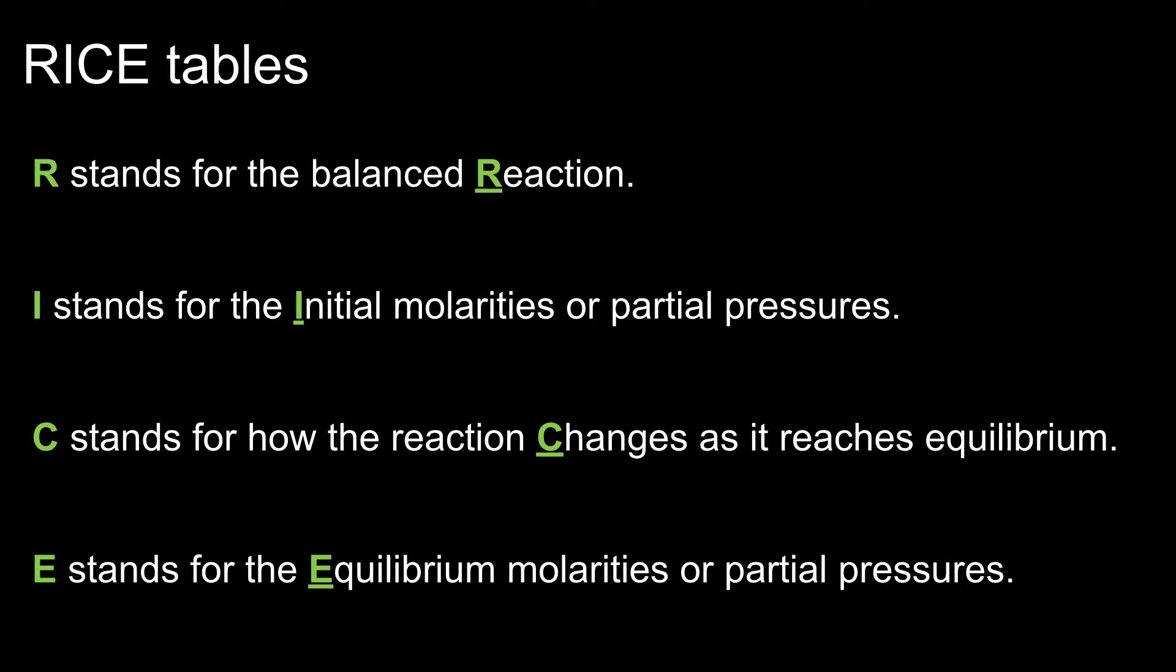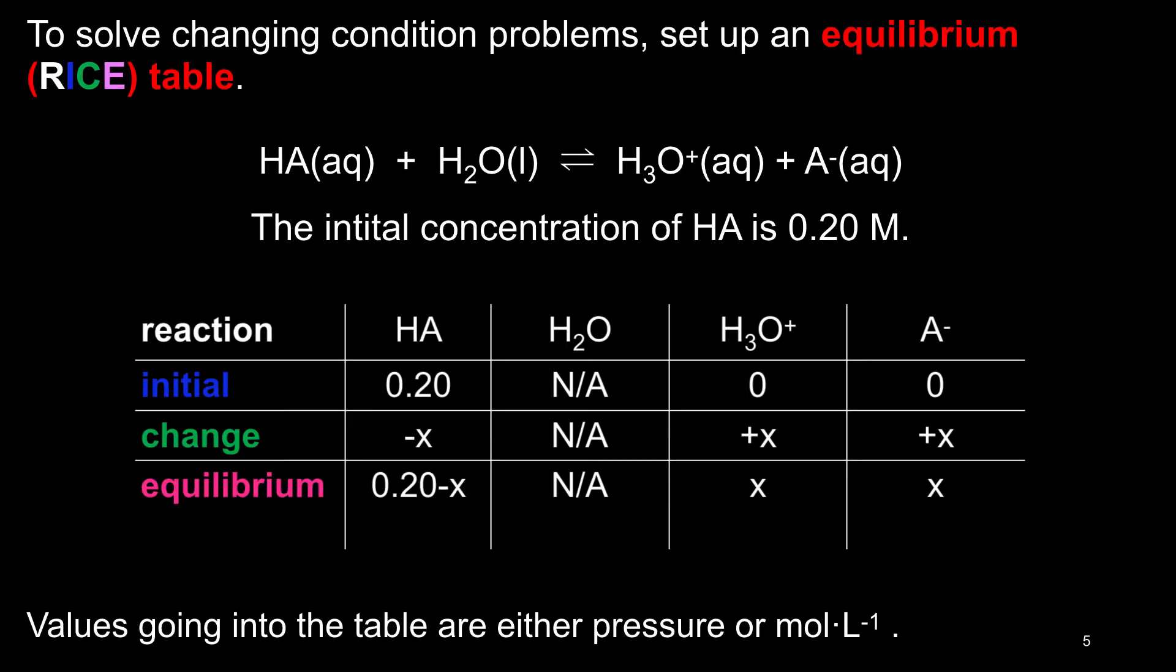Let us look at the table in more detail. The table has four rows, as mentioned on the previous slide. It also has a column for each molecule or ion in the balanced reaction.